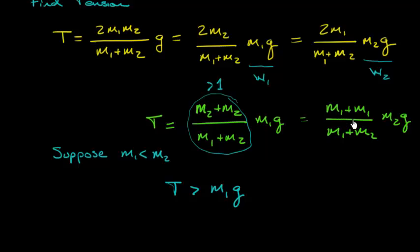The next piece, I have m1 plus m1 in the numerator, m1 plus m2 in the denominator. And again, if this assumption holds, if m1 is smaller, then my numerator is smaller than my denominator, right? So this piece right here is going to be less than one.